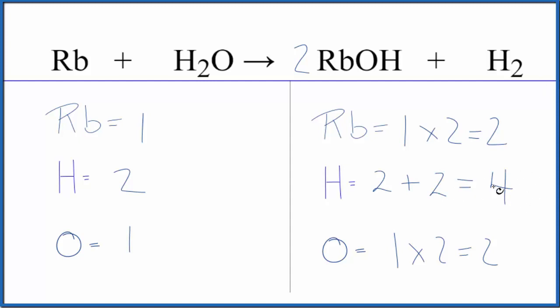That's good, though, because now that this is an even number, we could just put a two here. Two times two. That'll give us four. We've balanced the hydrogens.